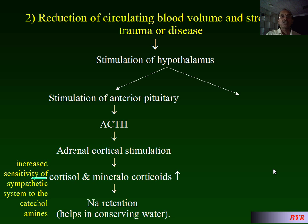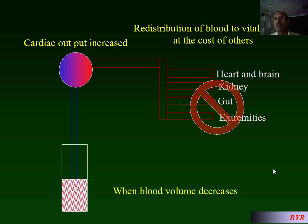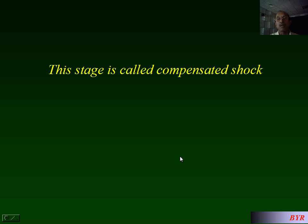Hypothalamic stimulation also stimulates the posterior pituitary, causing release of ADH. ADH acts on the renal tubules to cause absorption of more water, adding to plasma volume. The result is augmentation of cardiac contractility with increased pulse rate, plus peripheral vasoconstriction with redistribution of blood to the central vital organs.